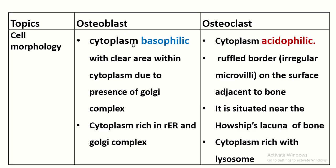The cytoplasm of the osteoblast is basophilic, with a clear area within the cytoplasm due to the presence of the Golgi complex. Like a protein-secreting cell, the cytoplasm is rich in rough endoplasmic reticulum and Golgi complex. The osteoclast cytoplasm is acidophilic.